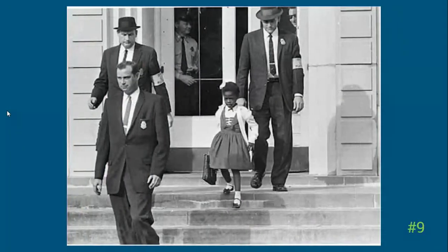Does it begin with Ruby Bridges, who was a young six-year-old girl in Louisiana going to become the first African American student to attend a white school in New Orleans? She had death threats against her and had to be escorted into and out of school by U.S. federal marshals every day to protect her life. She had to walk through a crowd of angry white adults screaming at her and calling her all sorts of racial epithets, but she went to school every single day.